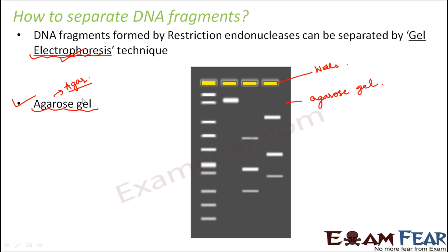How does the entire concept of electrophoresis work? Other than the agarose gel, we have wells — pore-like structures where you can insert the DNA fragments. That is our input: all the DNA fragments produced by the restriction endonuclease are put into these wells. The wells are structures dug on the agarose gel, and into them those DNA fragments are inserted.